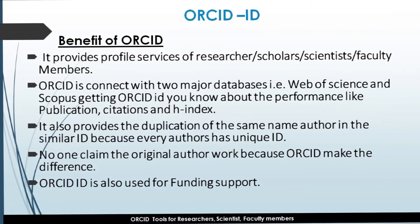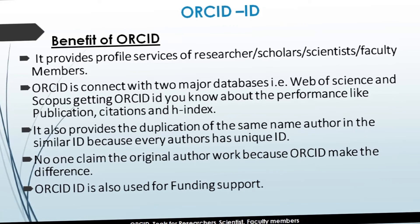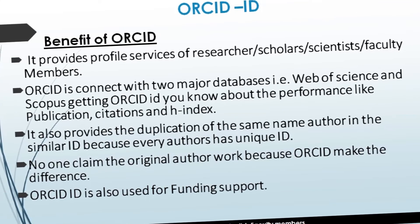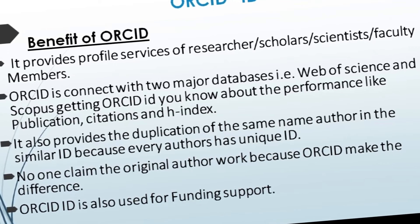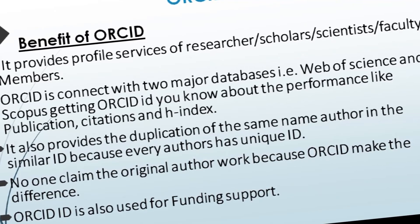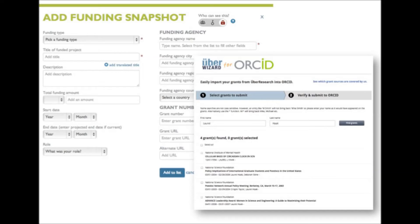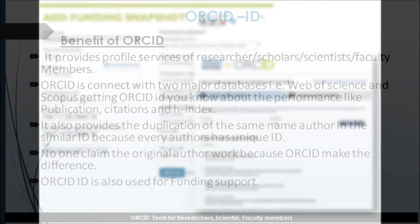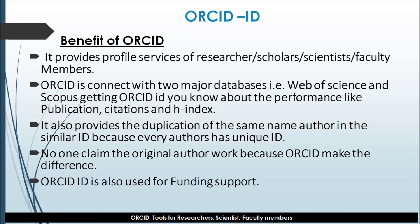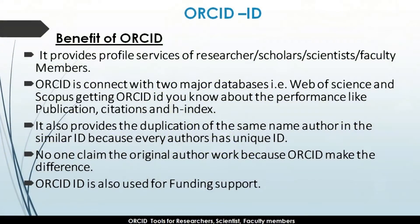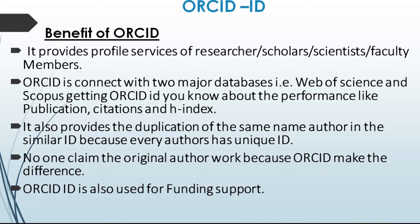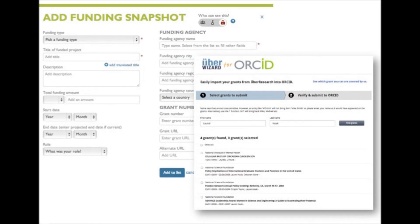The benefits of ORCID ID include providing profiling services for researchers, scholars, scientists, and faculty members, connecting with major databases like Web of Science, Scopus, and Mendeley. With ORCID, you can view the performance of other researchers, including publication count, citation count, and h-index score. It also avoids duplication of same-name authors, since every author has a unique ID — no one can claim another author's original work. ORCID ID is also used for funding codes.